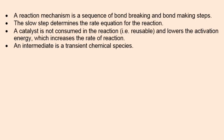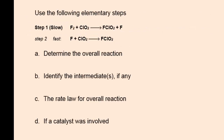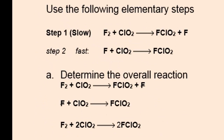An intermediate is a transient chemical species. Use these elementary steps to determine the overall reaction, identify any intermediates, determine the rate law for the overall reaction, and determine if a catalyst was involved. To determine the overall reaction, we simply add the elementary steps as given.